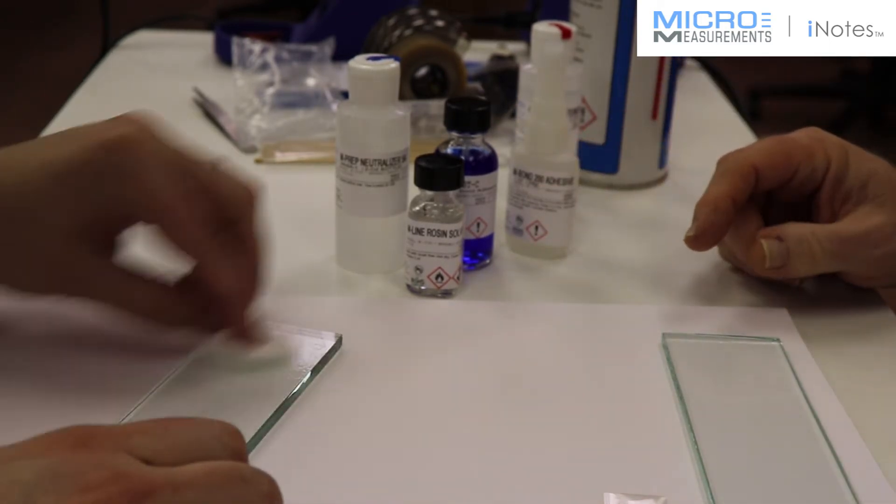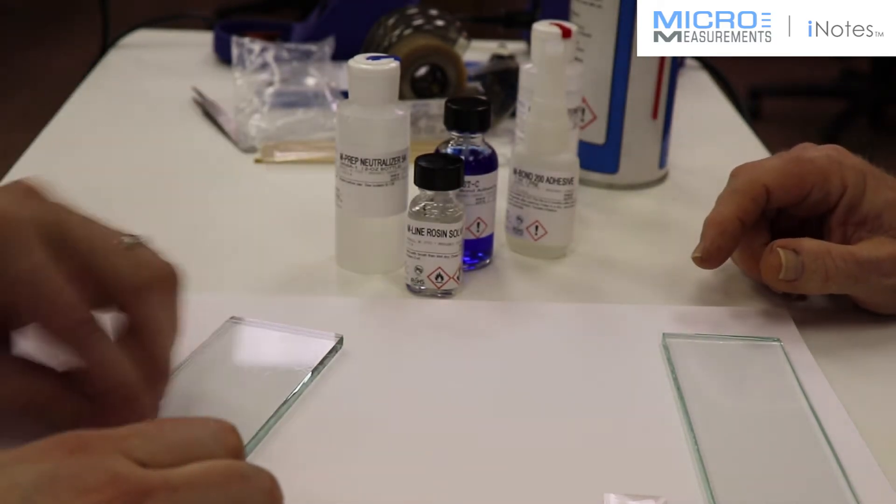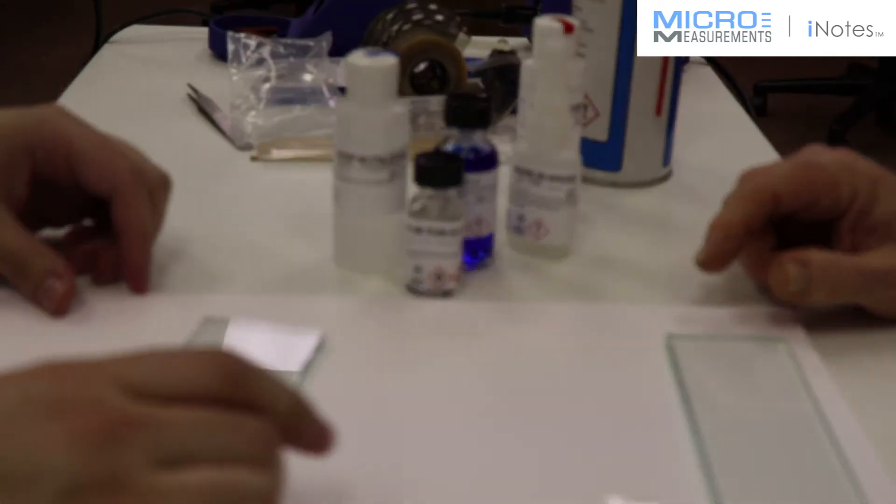He's going to take Neutralizer 5A, the blue tip bottle, and he's going to scrub the surface of that glass plate. This cleans up any debris, so we don't want to contaminate the bonding side of our strain gauge.